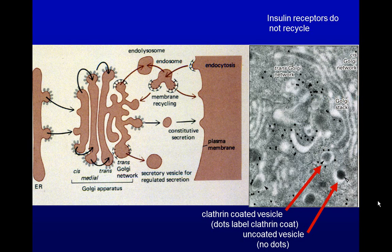The Golgi produces three types of secretory output: constitutive secretion, induced secretion, or proteins destined for the lysosome. Each one uses a coated pit and clathrin coat to facilitate vesicle formation. We can see the clathrin coat on the Golgi apparatus, the coated vesicle, and then the uncoated vesicle where we no longer see the gold beads or antibodies associated with clathrin. Clathrin can be seen loose, around the coated vesicle, but not in the uncoated vesicles.